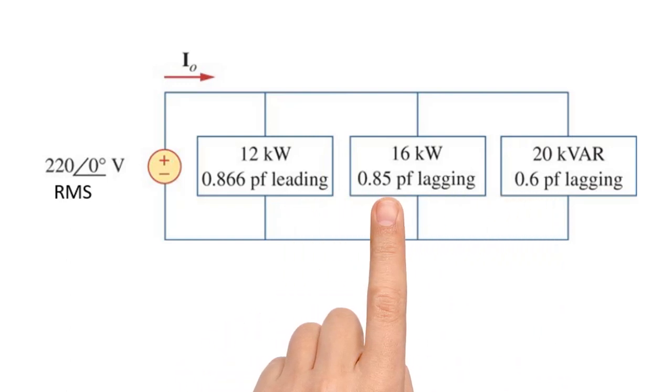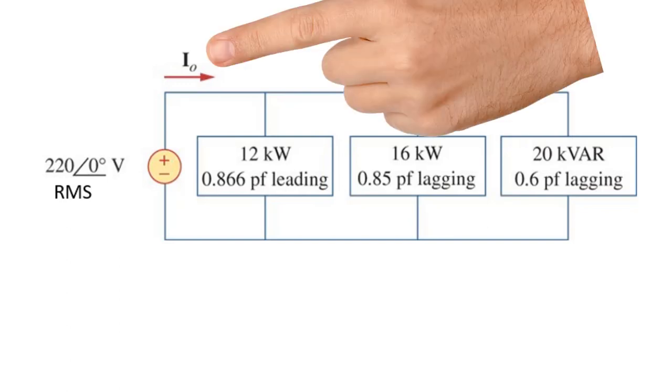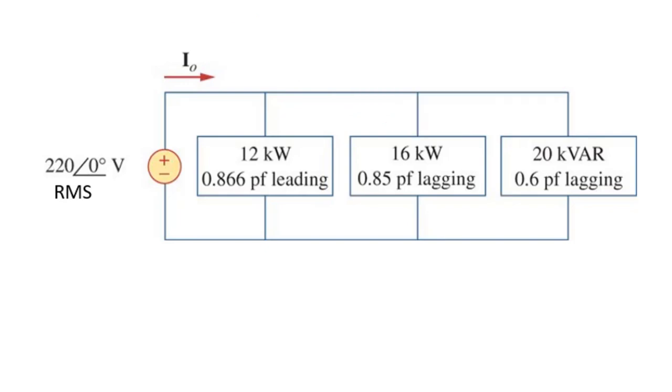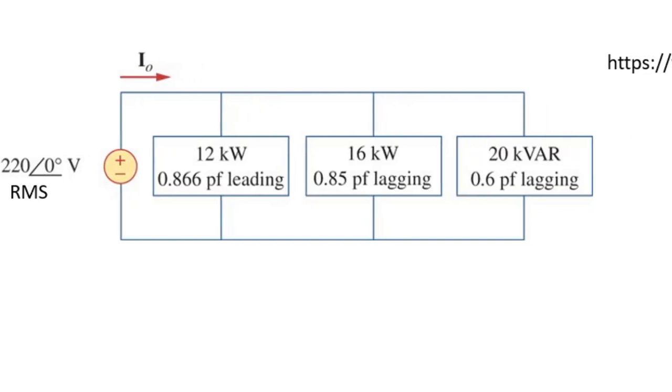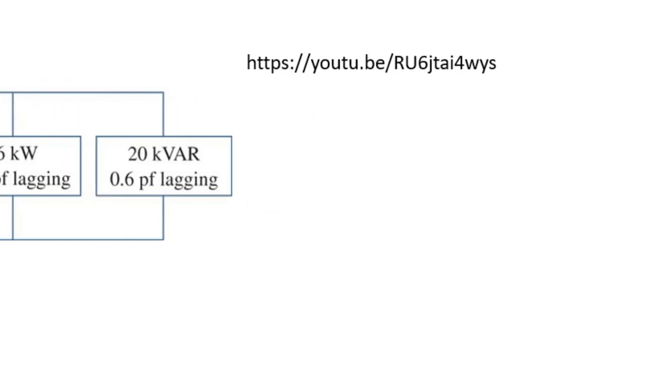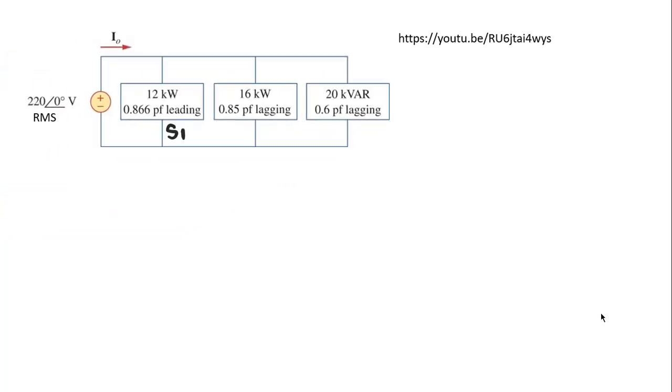The first two on the left are given by P their active power 12 kW and 16 kW. The one on the right is given by the reactive power Q, 20 kVAR. Also before going forward, because in this question they ask us to find what is the rms value of the current in the source I0, they also ask us to compensate the power factor of this system of three loads. For that I invite you to watch this video that I made for you on how to compensate a power factor in a power system. And now we begin.